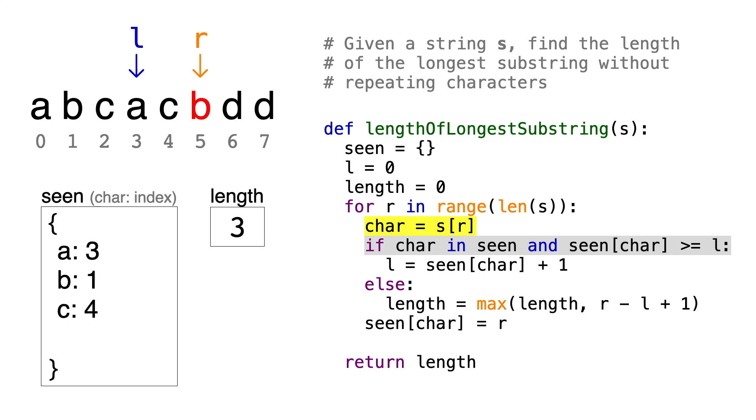Now the next iteration is kind of special. Char is B, which we have seen before, but its last known index, 1, is less than the current left index, 3. This means that even though we've seen it before, it's outside of the substring, so we can just add it onto our substring and calculate the new length, which is still 3, and update B's index to be 5. Next is D, which we've never seen before, so we can finally extend the length to be 4 characters and record the position of D, which is 6.